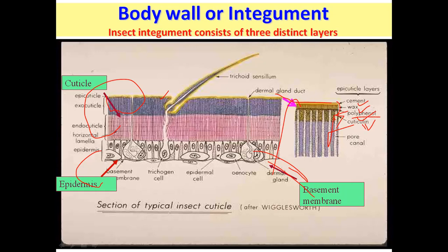The procuticle is the cutaneous part of the insect body wall and is differentiated into two layers: the exocuticle and the endocuticle. The exocuticle is the darkly pigmented, hard, and sclerotized part, which gives rigidity to the cuticle. It consists mainly of protein and hard protein.